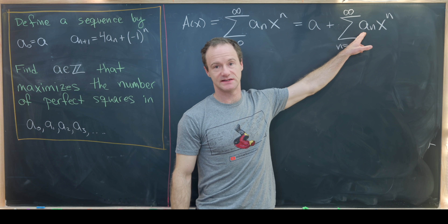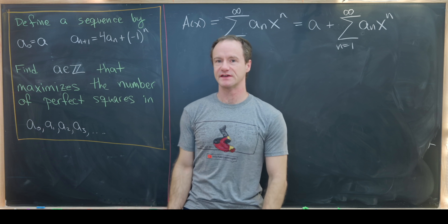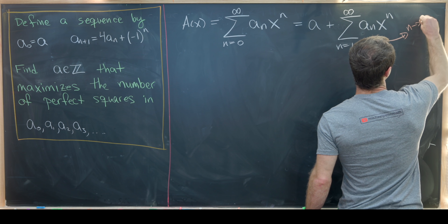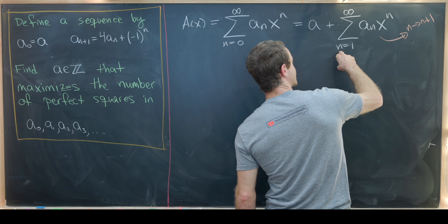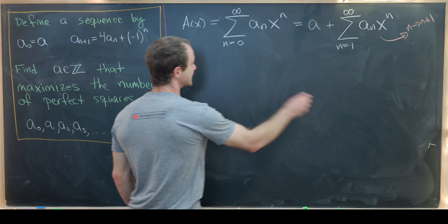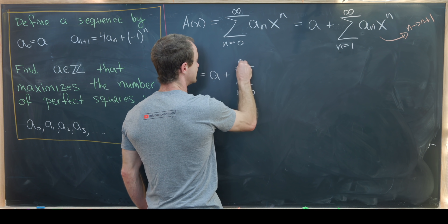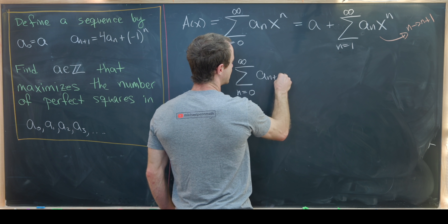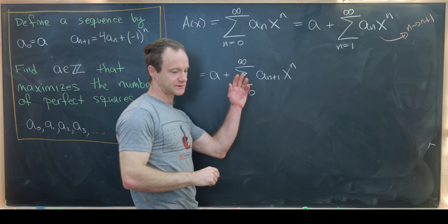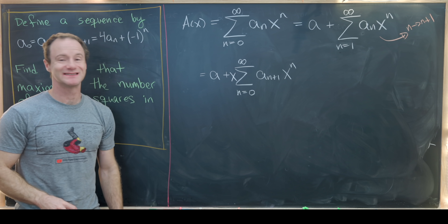Next, I'd like to re-index so that the subscript has n+1, so I can easily apply the recursion. Sending n to n+1 means I start at n = 0 instead of 1. So I've got a plus the sum as n goes from 0 to infinity of a_{n+1} times x^{n+1}. Factoring out one x and applying the recursion to a_{n+1} gives a plus x times the sum of (4a_n + (-1)^n) x^n.